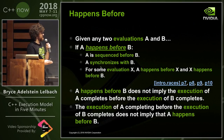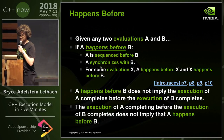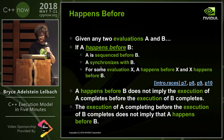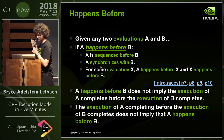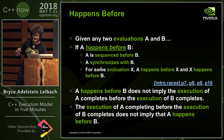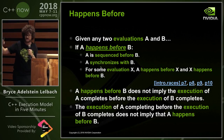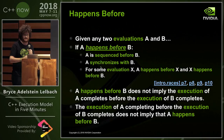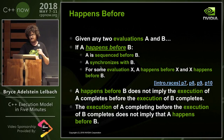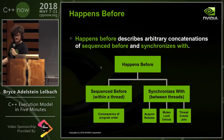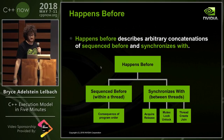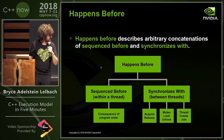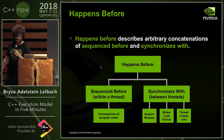Given any two evaluations A and B, if A happens before B, then A is sequenced before B, or A synchronizes with B, or for some evaluation X, A happens before X and X happens before B. Note: A happens before B does not imply that the execution of A actually completes before the execution of B completes, and vice versa. The terminology is slightly confusing — 'happens before' describes arbitrary concatenations of sequenced-before and synchronizes-with relations. That is the C++ execution model in five minutes.